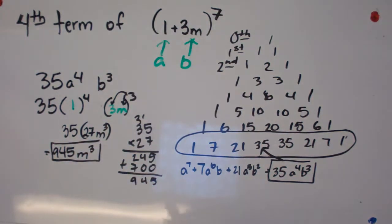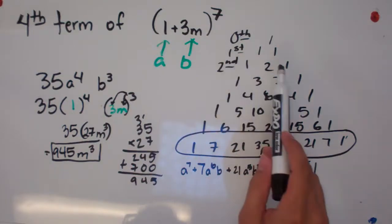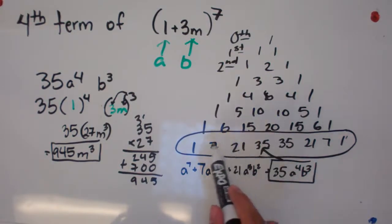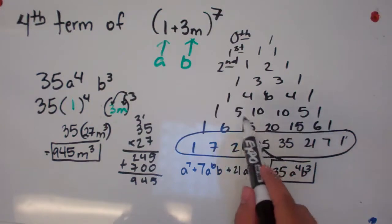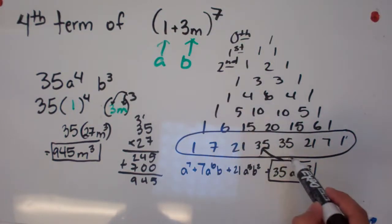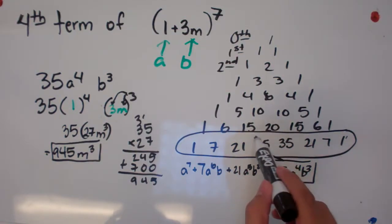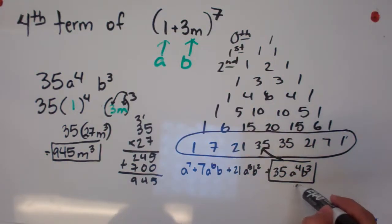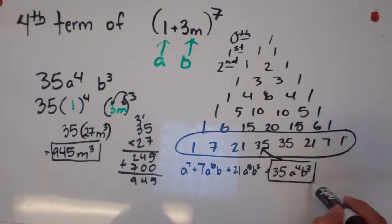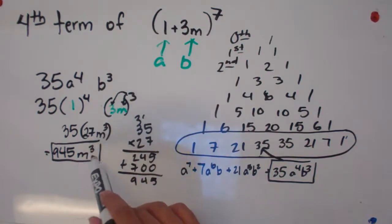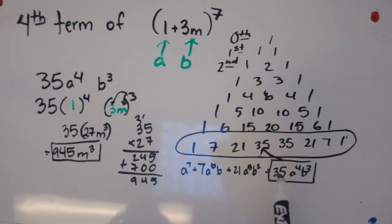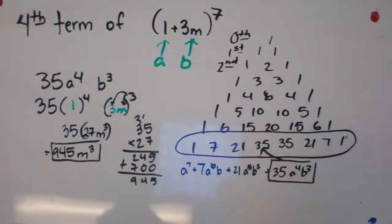To recap: to find the fourth term, I first wrote out Pascal's Triangle for our expansion — going to the seventh power, which is actually the eighth row but represents the seventh power — then picked out the fourth term with coefficient 35. I used that coefficient with the corresponding variable exponents, plugged in a equals one and b equals three m, and found what that term would be. That's an easier alternative to multiplying everything out. That was it for this video — if you have any questions, let me know. Bye.